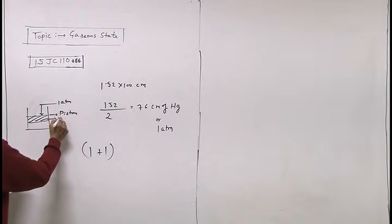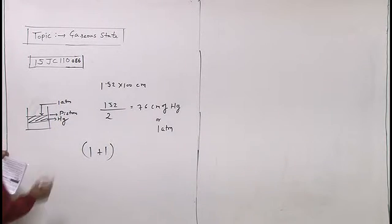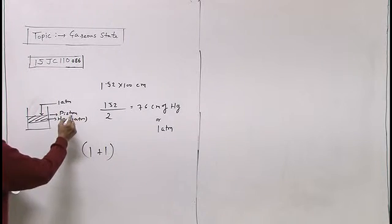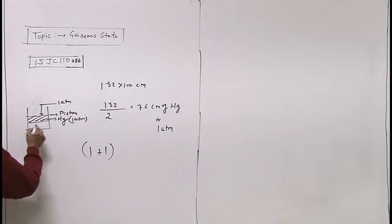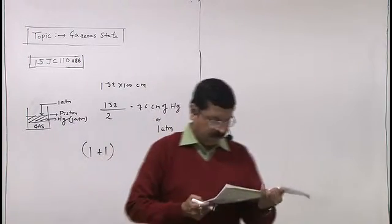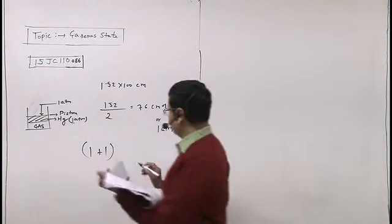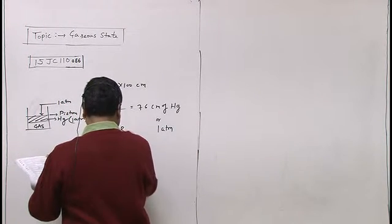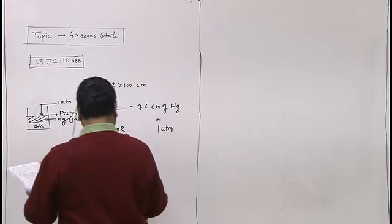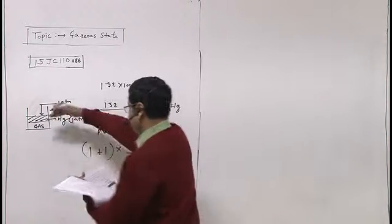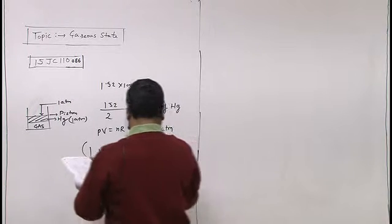Mercury here, this is the ideal gas. So PV is equal to nRT, and the volume is V by 2, the whole V equals nRT.